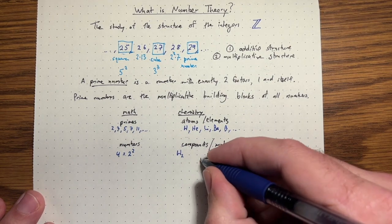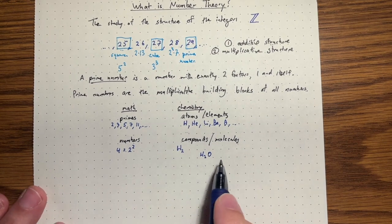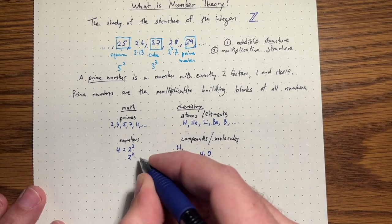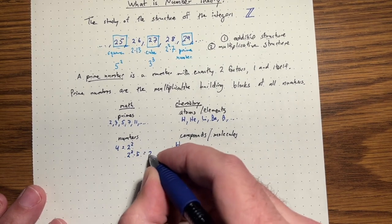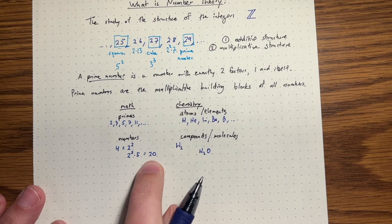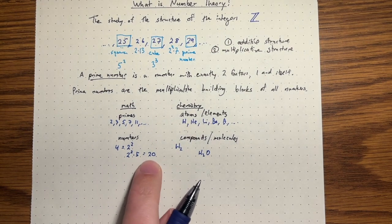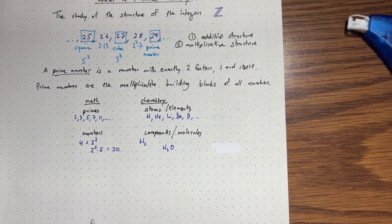For example, water, H2O, there's two hydrogens and one oxygen. It's kind of like the number 2 squared times 5, for example, or 20. So 20 is made up of two 2s and one 5. It's kind of the chemical formula for the number 20. So this is a nice analogy.